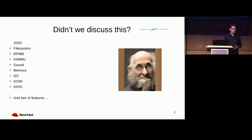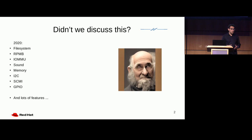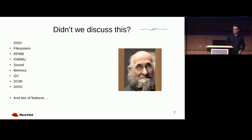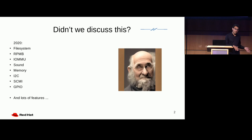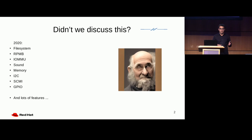You might be going like, Virtio 2, didn't we talk about this a year ago? Yes, and I told you then about a bunch of new devices that we introduced. Here's a laundry list: file system, RPMB, IOMMU, Sound, I2C, GPIO, memory, SCMI — a ton of new features as well. So what I don't want to do is just repeat all that. I'm going to talk about the new things, and I just went chronologically.